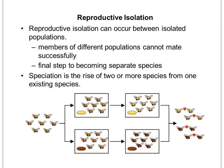Now let's talk about reproductive isolation. This is whenever we have isolated populations that are members of the same species. If they become isolated from one another, those members of different populations won't be able to mate successfully. This is the start of a new separate species forming — we use the term speciation to describe the rise of two or more species from one existing species. In a hypothetical example with bees, we divide them into two populations and change their food source. Over time they take on different characteristics, and when brought back together, yellow ones only mate with yellow ones and brown only with brown — they're starting to diverge as separate species.